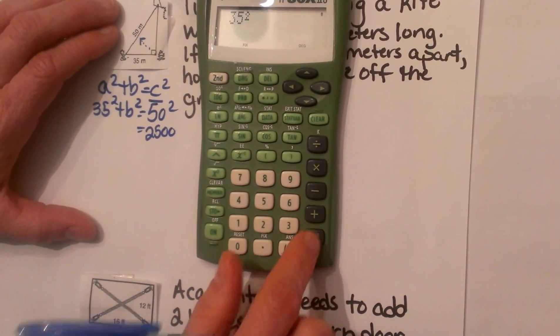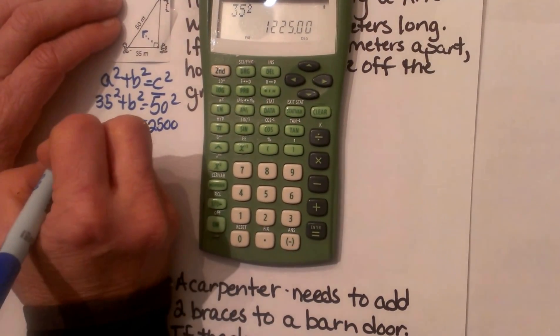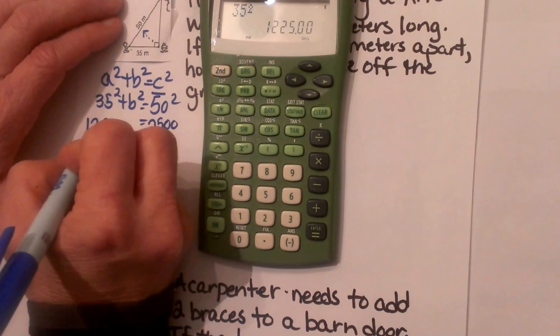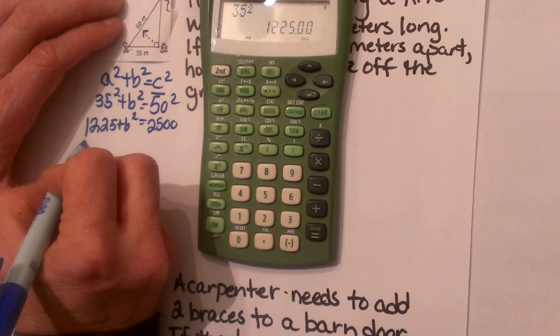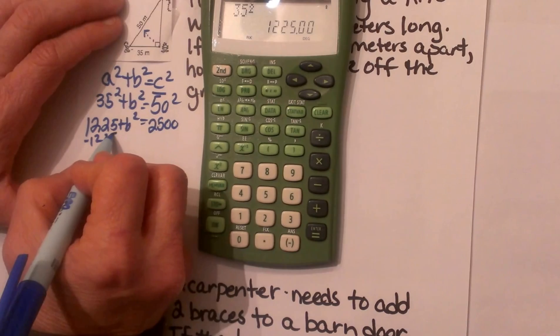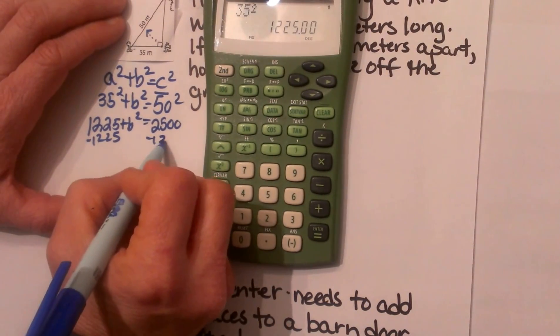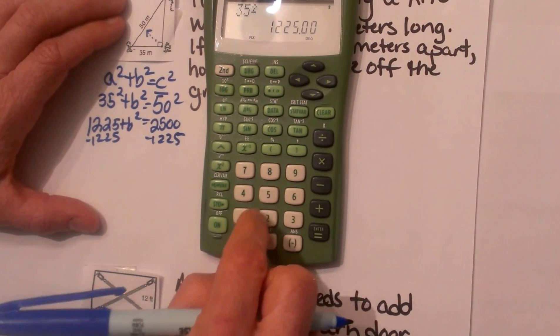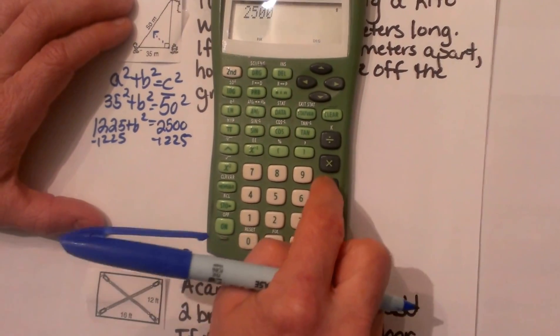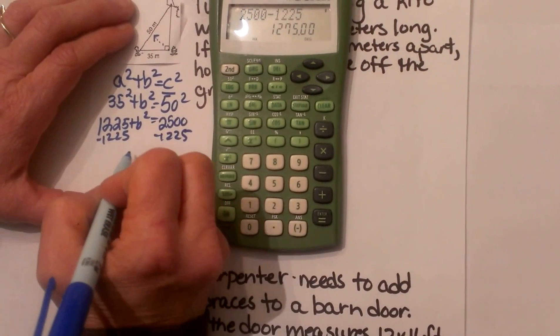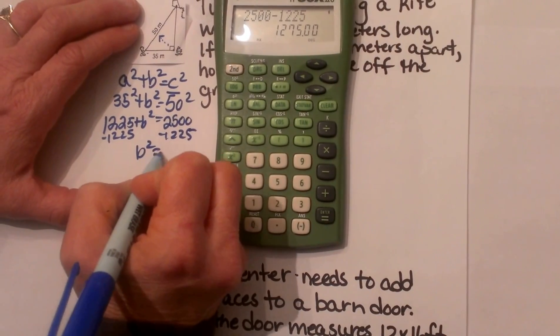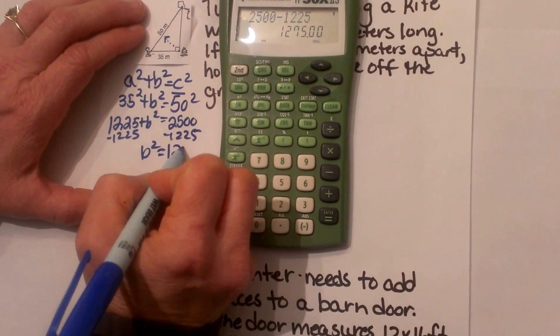That gives me 1225 and I am going to bring the b² down. Now I am going to subtract 1225 from both sides so 2500 - 1225, that is going to give me b² = 1275.